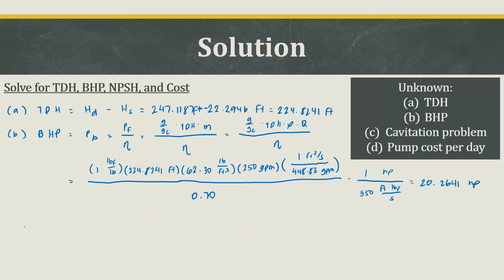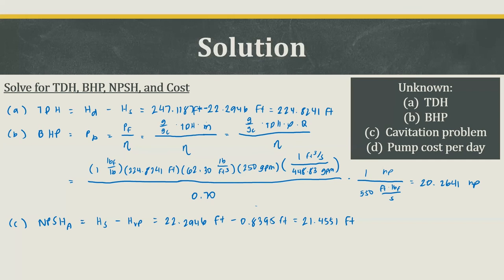For letter C, to check for cavitation problems we solve for the net positive suction head available, NPSHA. That's the suction head minus the vapor pressure head: 22.2946 minus 0.8395 feet, giving NPSHA = 21.4551 feet. Since NPSHA of 21.4551 feet is greater than NPSHR of 18 feet, there are no cavitation problems.